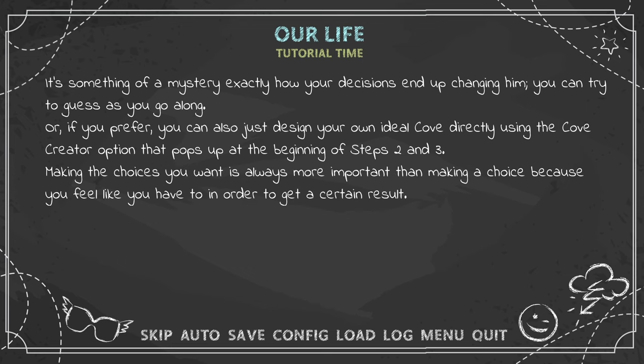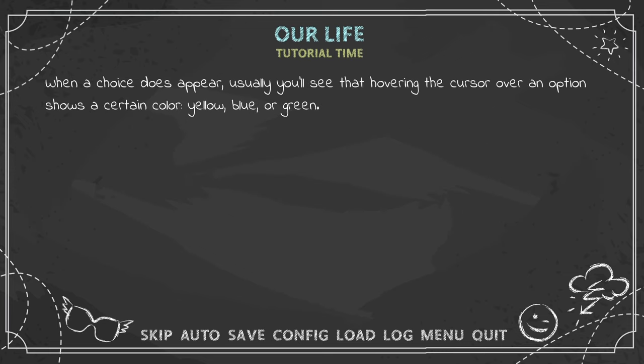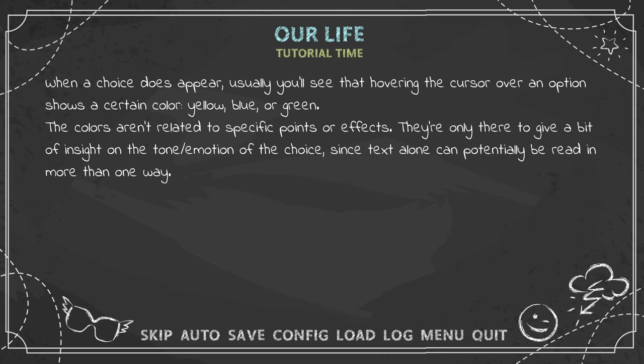Making the choices you want is always more important than making a choice because you feel you have to get a certain result. When a choice appears, hovering the cursor over an option shows a color — yellow, blue, or green. The colors aren't related to specific points or effects; they're only there to give insight on the tone and emotion of the choice, since text alone can potentially be read in more than one way.